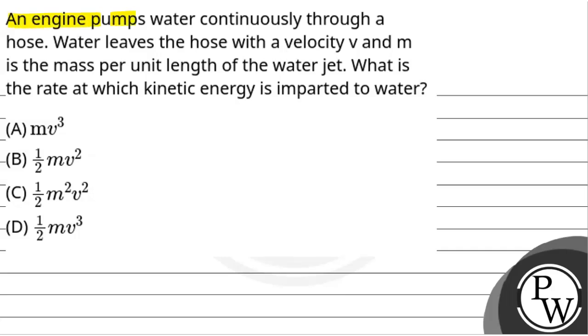The question says that an engine pumps water continuously through a hose. Water leaves the hose with a velocity v and m is the mass per unit length of the water jet. What is the rate at which kinetic energy is imparted to water?